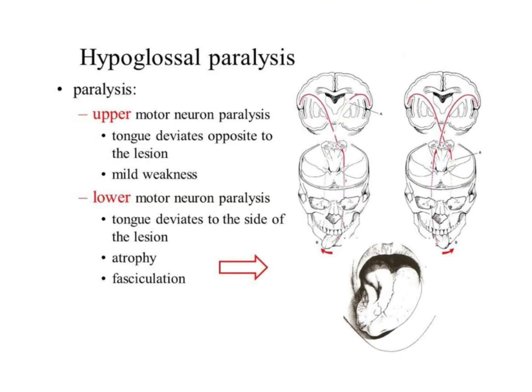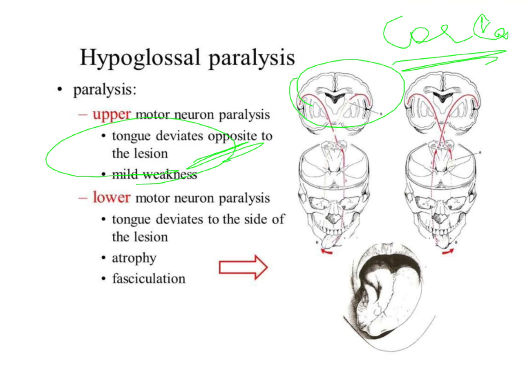One important thing to remember is that when you have paralysis of the hypoglossal nerve, there are two types of paralysis: upper motor neuron paralysis and lower motor neuron paralysis. The upper motor neuron paralysis is when the paralysis occurs in the area of the cerebral cortex. In this case, the entire deviation is going to be to the opposite side of the paralysis. So, if you have a lesion on the right side, the tongue is going to move to the left side.